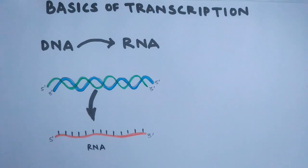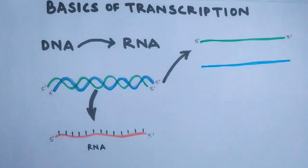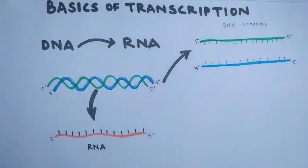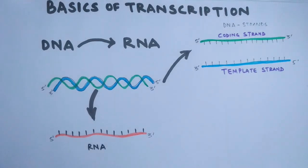In the DNA molecule, it has two strands. One is called the coding strand and the other is called the template strand. The coding strand is the DNA strand whose base sequence corresponds to the base sequence of the RNA transcript produced.